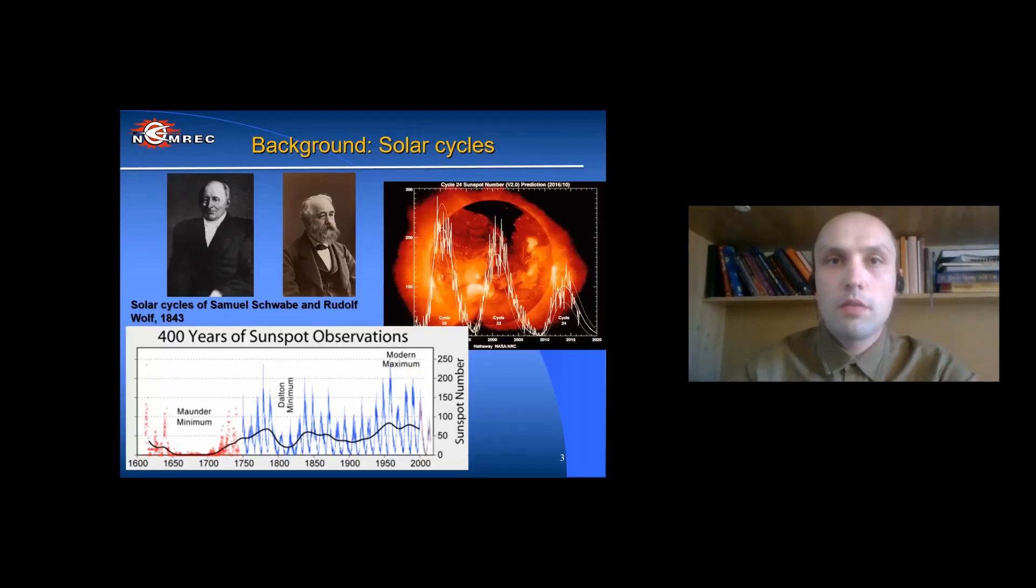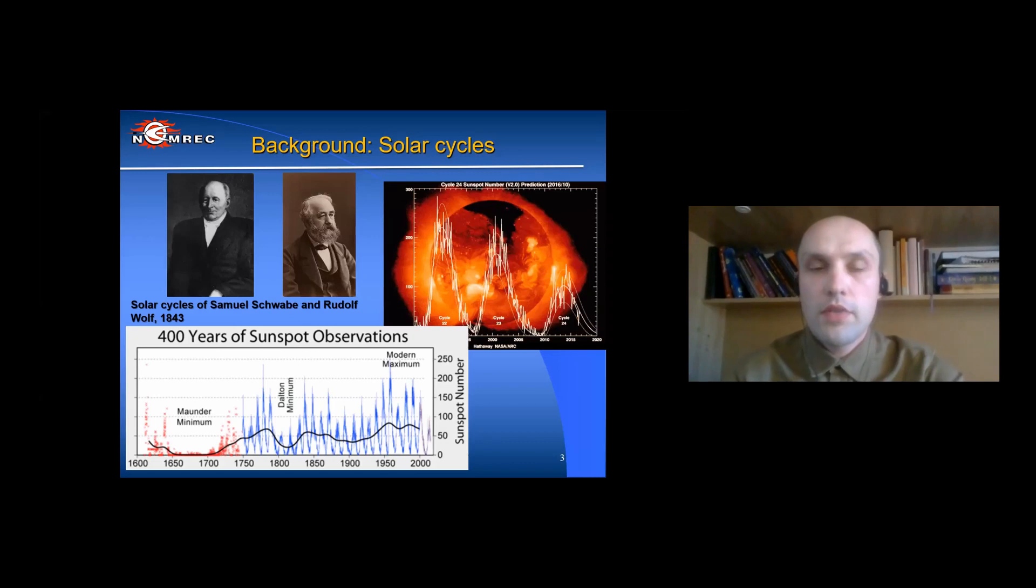First, I would like to tell you a little about the background of the study of the sun and solar terrestrial connection. The first scientists who showed the activity of the sun in the form of solar flares were the German astronomer Samuel Schwabe and the Swiss astronomer Rudolf Wolf in 1843. On the right side of the slide, you can see the solar growth and fall cycle of 11 years. Today is the 25th solar cycle. It began in December 2019 and will peak in 2025.